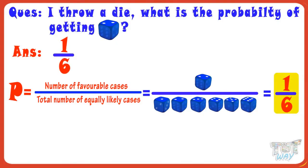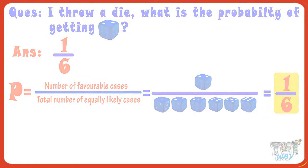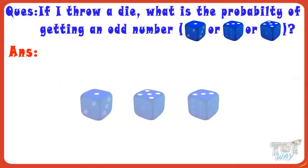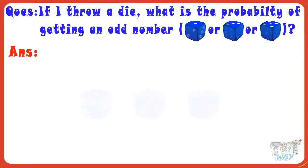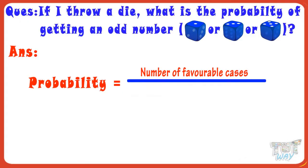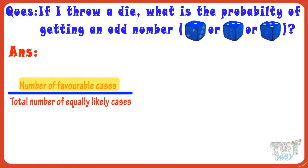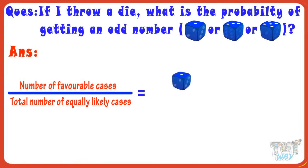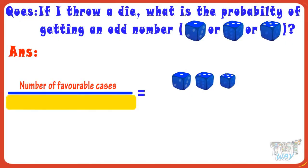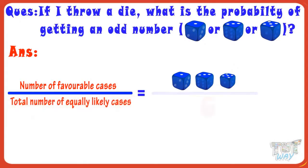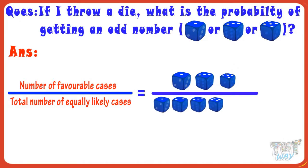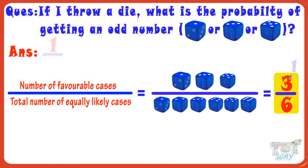Let's take another example. If I toss a dice, what is the probability of getting an odd number? We know probability is number of favorable cases divided by total number of equally likely cases. Number of favorable cases here are 3, that is, getting an odd number — 1, 3, or 5 in a dice — and total number of cases possible are 6. As we know, there are 6 numbers in a dice, numbering from 1 to 6. So, probability of getting an odd number is 3 by 6, or 1 by 2.